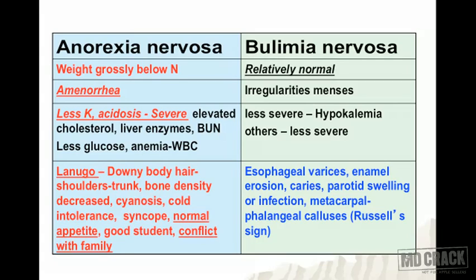Comparing anorexia nervosa and bulimia nervosa: in anorexia, weight is grossly below normal; in bulimia, weight is relatively normal. Anorexia requires amenorrhea; bulimia shows menstrual irregularities. In anorexia there are serious electrolyte disturbances including hypokalemia and acidosis, along with elevated cholesterol, liver enzymes, and BUN, and decreased glucose, anemia, and abnormal WBC. In bulimia, disturbances are less severe — hypokalemia may be present but is milder.